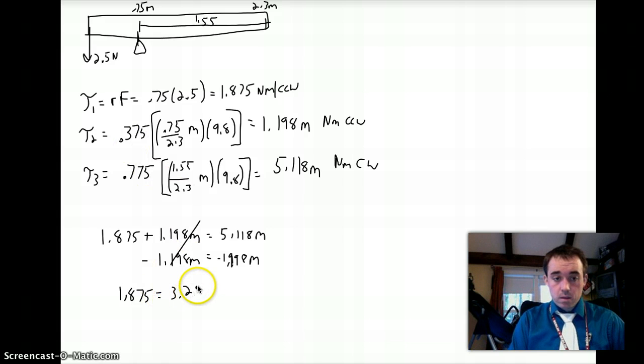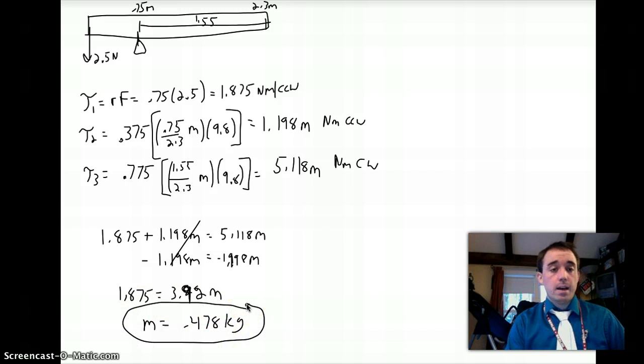And then I have to divide by 3.92, so 1.875 over 3.92 gives you the final answer of 0.478 kilograms. All right, hopefully that is good, and move on to the next problem.